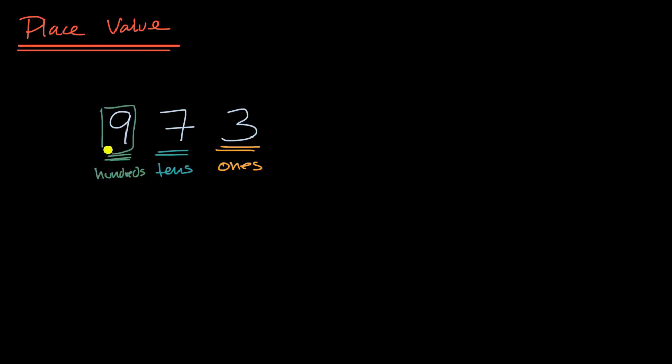And so this nine doesn't just represent nine, it represents 900. Or we could write that as 900. Similarly, the seven doesn't just represent seven, it represents seven tens or 70. This three represents three ones, so it actually does represent three.